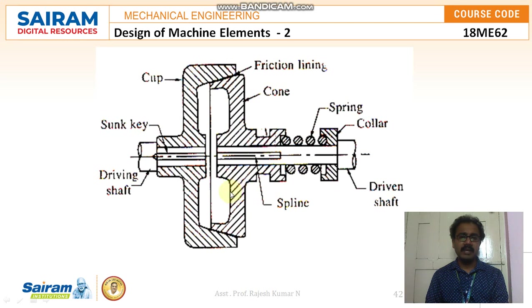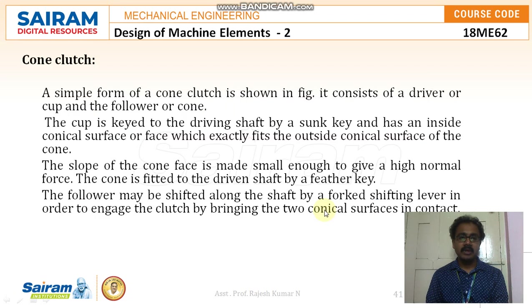Moving to the cone clutch — you can see a simple form of the cone clutch. The major difference from a plate clutch is that it is made in a cup and cone shape. Between the cup and cone, a friction lining (usually leather or asbestos) is provided. The cup is connected to the driving shaft with a sunk key, and the cone is connected to the driven shaft using a feather key with the usual spring and collar setup. It consists of a driver (cup) and a follower (cone). The slope of the cone face is made small enough to give a high normal force. The follower may be shifted along the shaft by a forked shifting lever to engage or disengage the clutch.